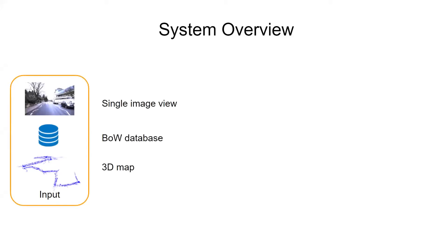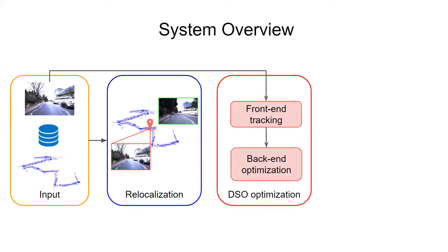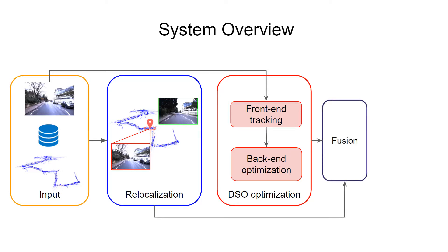In this slide, we present an overview of our system. As input, we take a single-frame image, a bag-of-words database, and a pre-built map. The map contains keyframe poses and observed 3D points, a part of which comprises keypoints with associated descriptors. Based on this input, we can perform relocalization against the map. Concurrently, the camera is tracked with respect to a reference keyframe using direct image alignment. Poses of keyframes are further refined in the back-end window optimization. Once the pose is finalized, we fuse it with relocalization estimates in a local pose graph. This way, by utilizing information from the map, we can lift a common local coordinate frame to obtain a global camera pose.